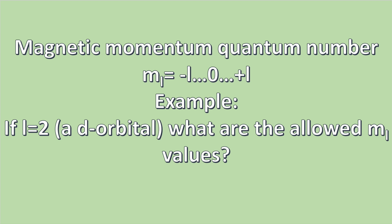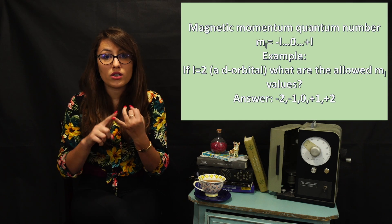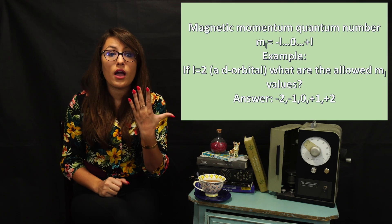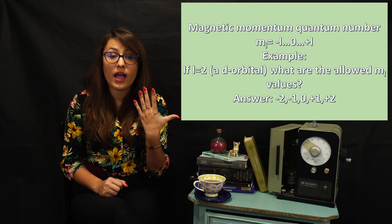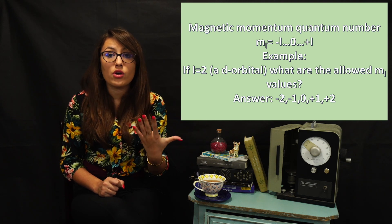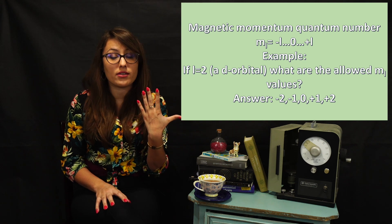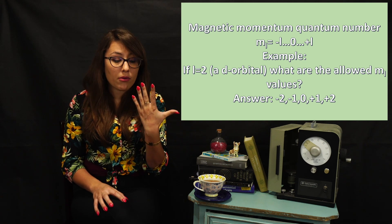For example, if we have l = 2, a d orbital, the allowed ml values would be −2, −1, 0, 1, and 2. That gives five orientations. So what is the maximum number of electrons that can be held within the d orbital? Remember, each orientation can hold two electrons, so 10 electrons can be held in the d orbital.